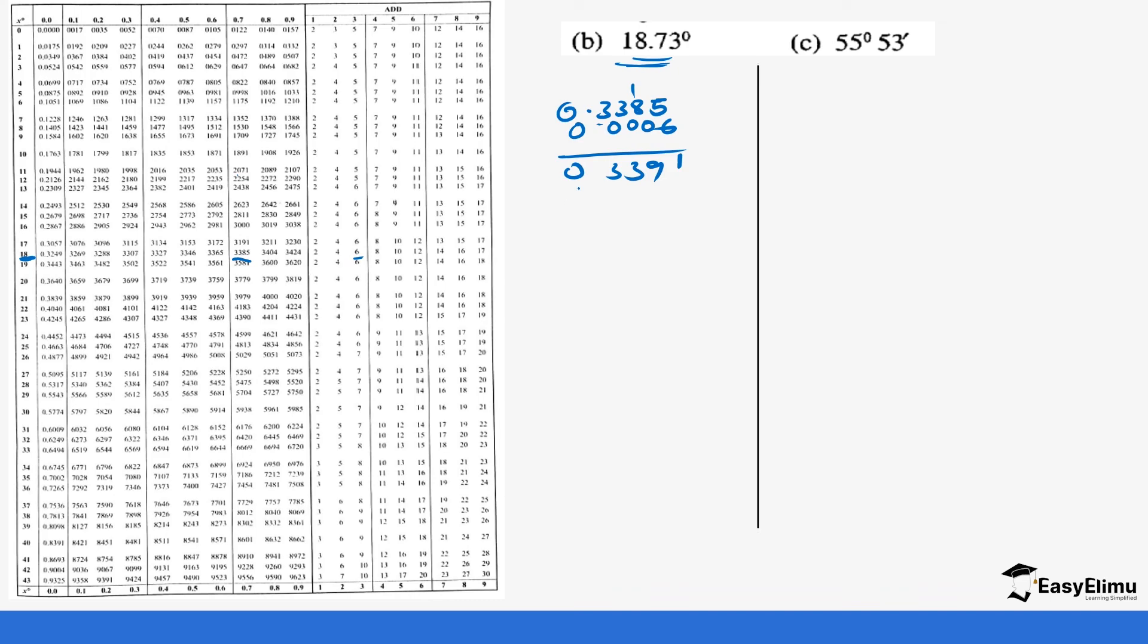So the tan of 18.73 is 0.3391. And then 55 degrees and 53 minutes. Remember we do not have 53 minutes in our table but remember we said 1 degree equals 60 minutes. What about 53 minutes? Because this is the only part that is in minutes, that means it's 1 times 53 divided by 60, so it's 53 divided by 60 which gives us 0.88. So this means it's 55 degrees plus 0.88 which gives us 55.88 degrees.